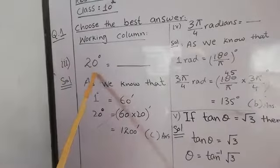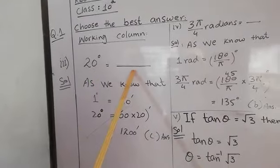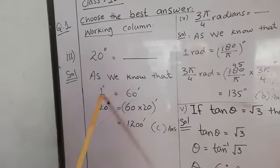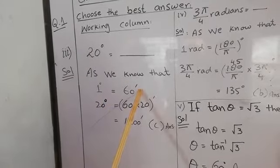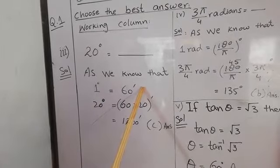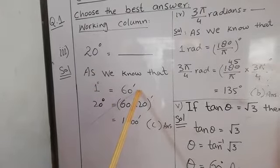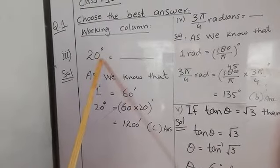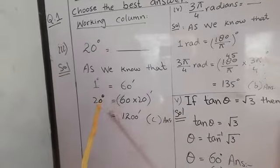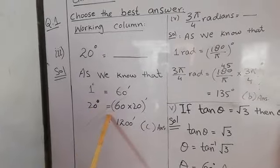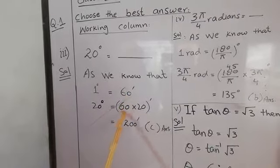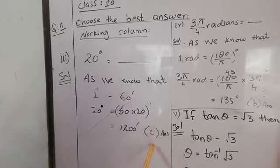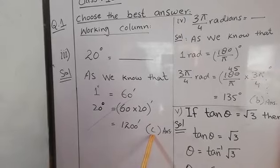Option number three: find 20 degrees equals to how many minutes. One degree equals 60 minutes according to the sexagesimal system. So 20 degrees multiplied by 60 gives 1200 minutes. The right answer is option C: 1200 minutes.